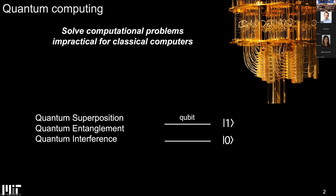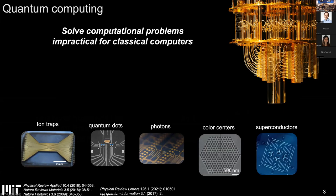Quantum computing, from a textbook definition, is a computational paradigm which promises to solve problems that are impossible for classical computers, particularly at scale. It uses the laws of quantum mechanics such as superposition, entanglement, and interference on the smallest unit of quantum information—the qubit, the quantum bit—presented here as a two-level system with levels zero and one. There are several notable qubit technologies: ion traps, quantum dots, photons, color centers in diamond and silicon, and superconducting qubits.